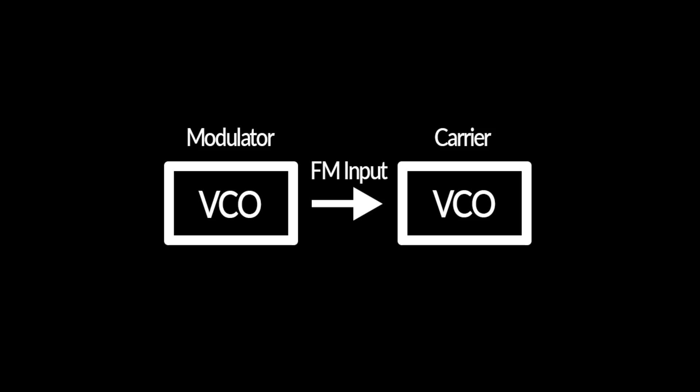We can perform frequency modulation by routing the output of one oscillator, called the modulator, to the FM input of another oscillator, referred to as the carrier.